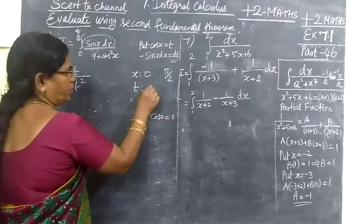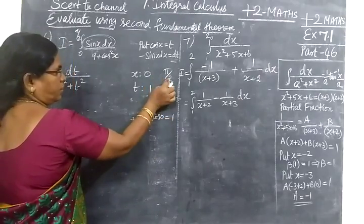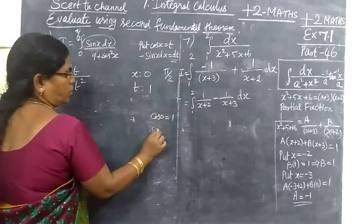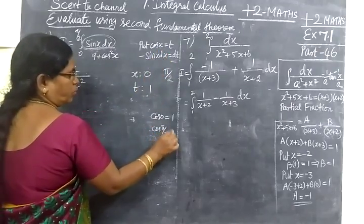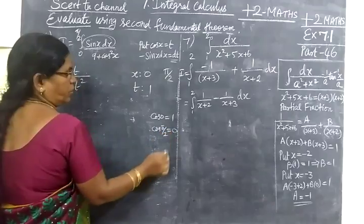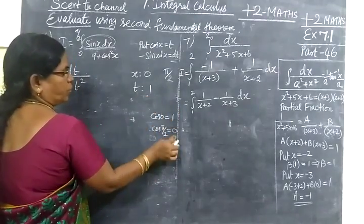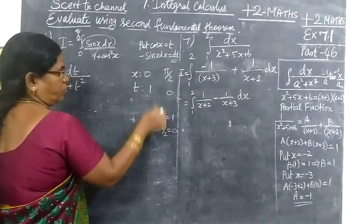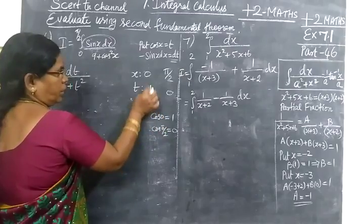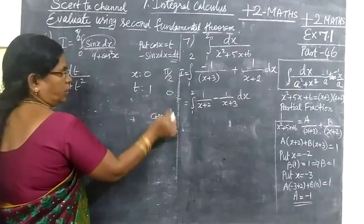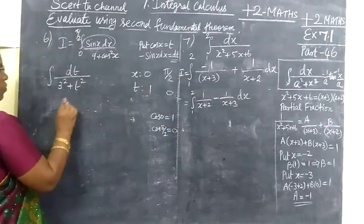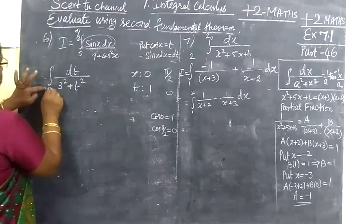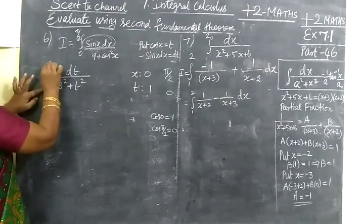Cos 0 is 1, then t value is 1. Next x is π/2. Cos π/2 is 0, then t value is 0. x is 0 is 1, x is π/2 is 0. So now we change the limit: 0 for 1, π/2 for 0.